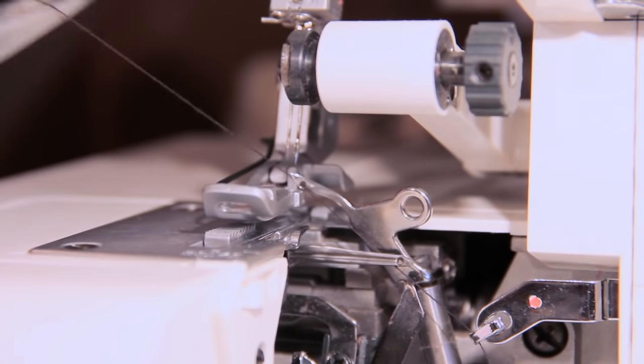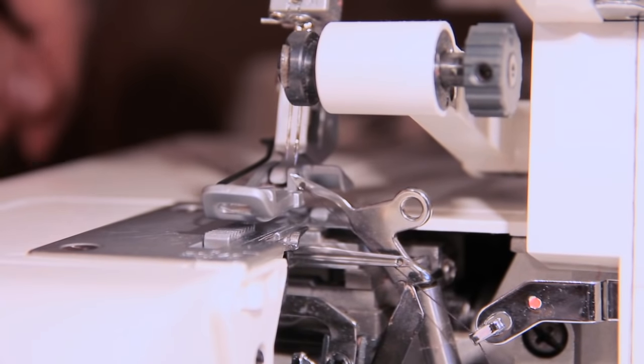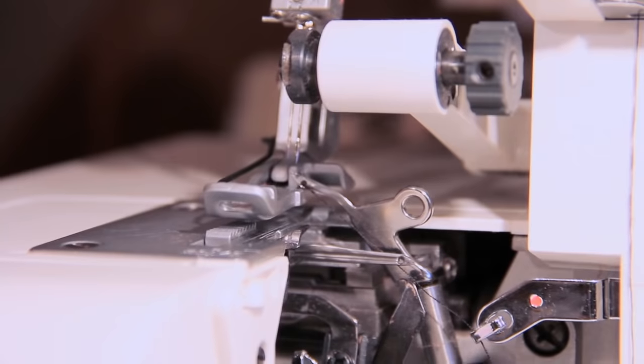Now take your upper looper thread and pass it underneath the presser foot, all the way to the back. Always do this with your thread.